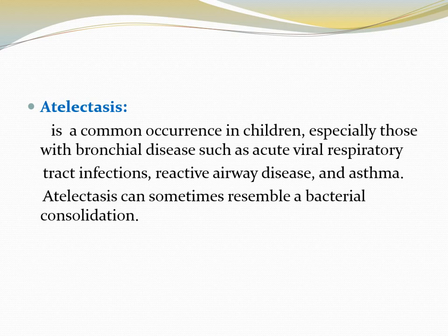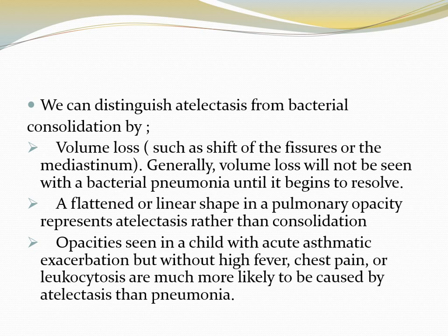Another alveolar pattern is atelectasis. It is a common occurrence in children, especially those with bronchial disease such as acute viral respiratory tract infection, reactive airway disease, and asthma. Atelectasis can sometimes resemble bacterial consolidation. We can differentiate atelectasis from bacterial consolidation by volume loss, a flattened or linear shape in the pulmonary opacity, and by clinical features. When opacity is seen in a child with acute asthmatic exacerbation but without high fever, chest pain, or leukocytosis, it is much more likely to be caused by atelectasis than pneumonia.